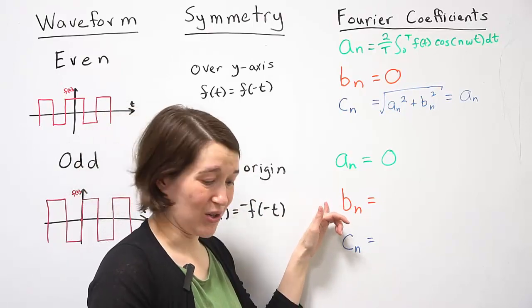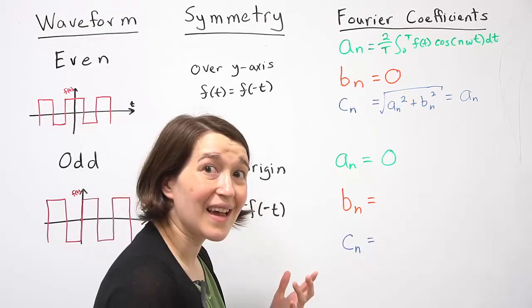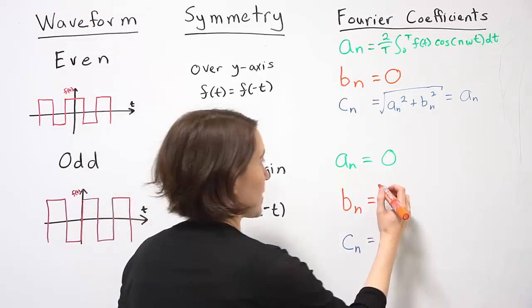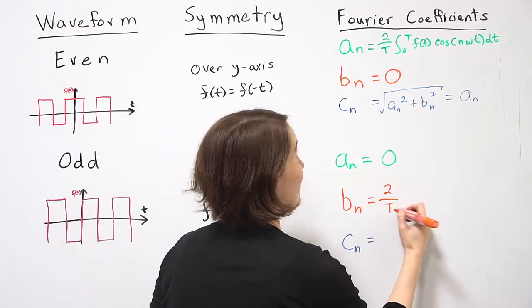For Bn terms, those are based on sine, and those are actually going to be the same as the basic definition. So we'll rewrite the definition here.